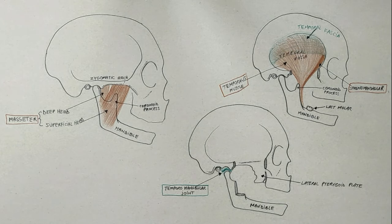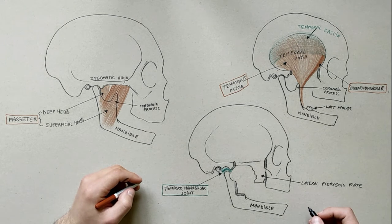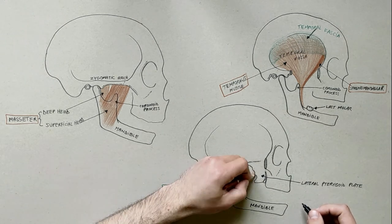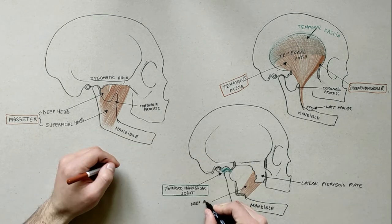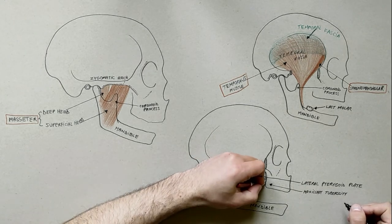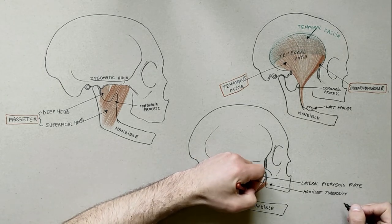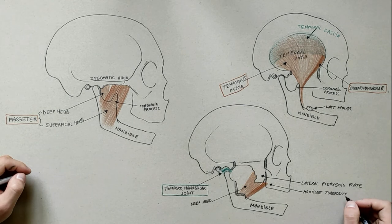On the last diagram we will discuss the two pterygoid muscles. The medial pterygoid muscle has two heads. The deep head arises from the medial surface of the lateral pterygoid plate, while the superficial head arises from the maxillary tuberosity and pyramidal process of palatine bone.